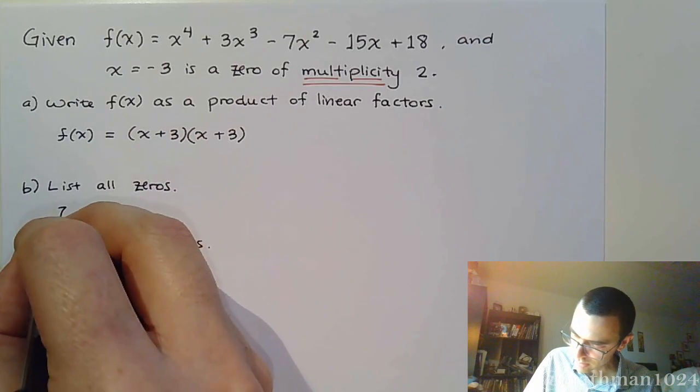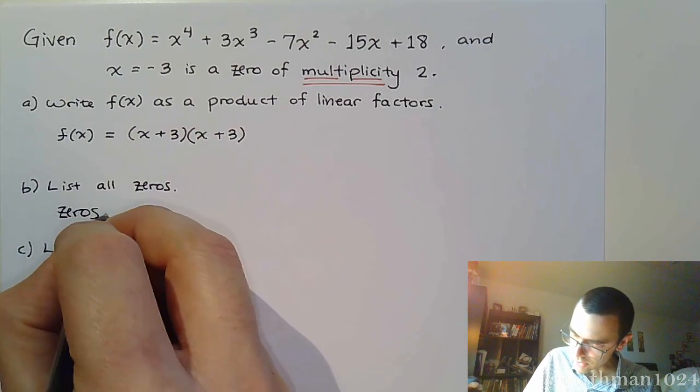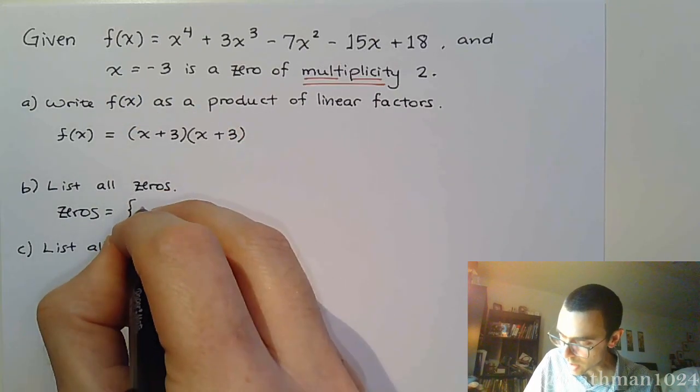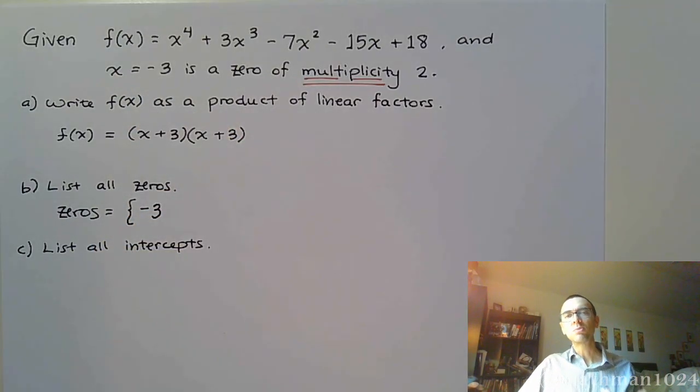Listing all zeros. All right, so the zeros are going to be, well I gave you negative three, so you automatically know that one. It says it's a multiplicity of two, but you don't need to write it two times. We just understand that it's accounting for two of the four total zeros.